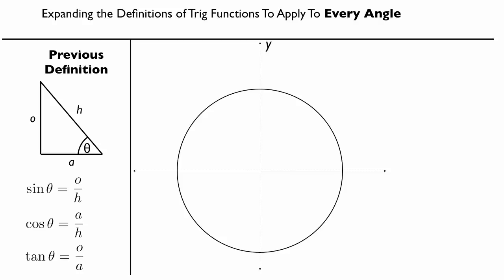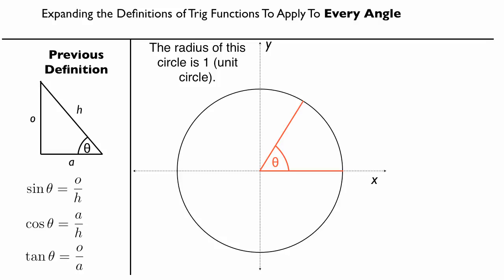Basically, we start with a coordinate plane and draw a unit circle. A unit circle is a circle where the radius is 1, so every point on the circle is a distance of 1 away from the center. Suppose we had an angle — the bottom of the angle rests on the x-axis and the other side extends outward. We call this angle theta.